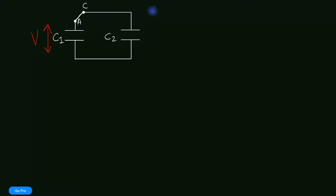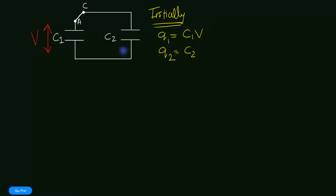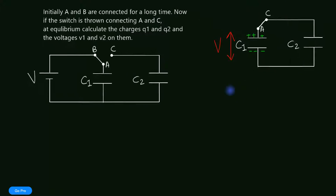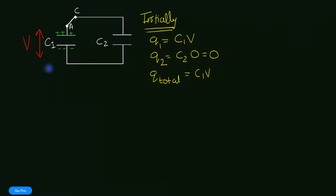Let's write down the initial conditions — this is the moment I connect switches A and C. We know that capacitor C1 is fully charged and the charge on C1 must be equal to C1 times V. The charge on capacitor C2 must be C2 times its voltage, which is zero — so that's just zero. Therefore, the total charge on this system must be equal to C1 times V, and that's going to be important for us.